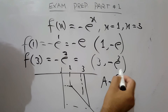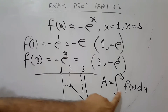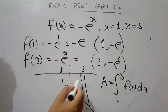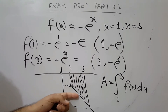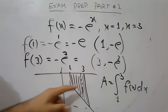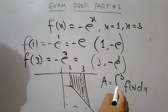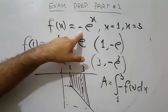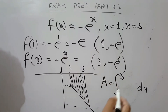The area is the integral from 1 to 3 of f(x) dx. Since the function is negative, we multiply by negative so that the area becomes positive. We calculate the actual area under the curve by taking the negative of the integral and then evaluate it. This gives the integral of e to the power x dx.